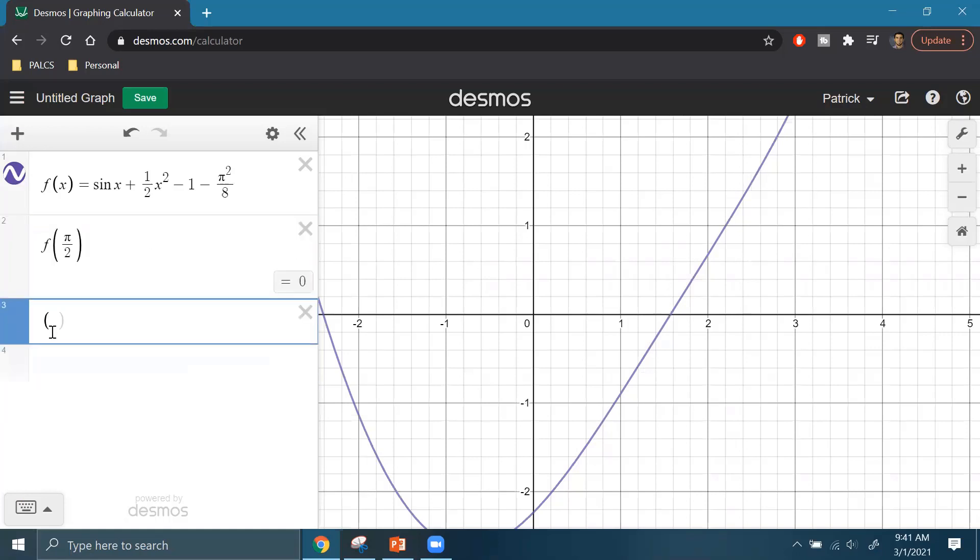Then the other thing I can do is, you know, you can enter a coordinate x, y like this. You can enter it in function notation. So the x value is π/2. Get rid of that decimal there. Comma. And then the y value is f of π/2.